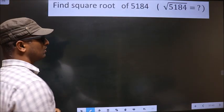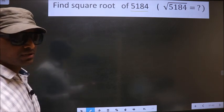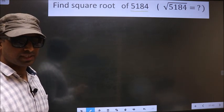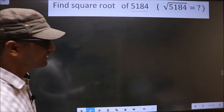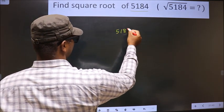Find square root of 5184. To find the square root by long division method, first we should frame it in this way: 5184.